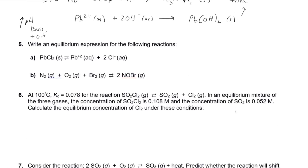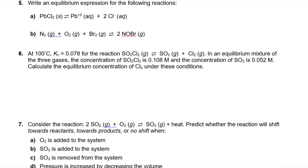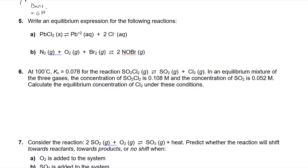Next: writing equilibrium expressions. First, look at the phases. For a reaction with aqueous and solid species: solids do NOT change concentration and are excluded from the equilibrium expression. So for a reaction producing Pb2-plus (aqueous) and Cl- (aqueous) from a solid, the Kc expression is simply: Kc = [Pb2+][Cl-]^2. The stoichiometric coefficient of two on chloride means it's raised to the second power. Lead chloride solid is excluded.